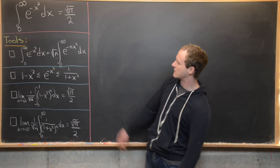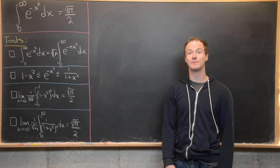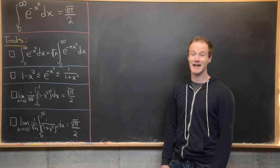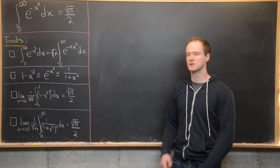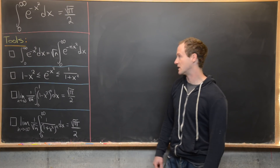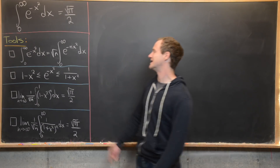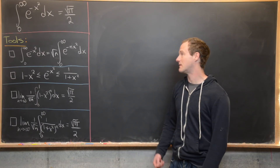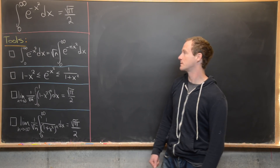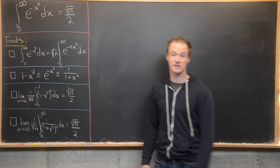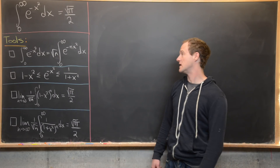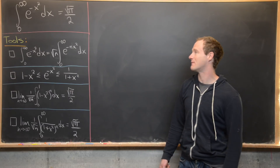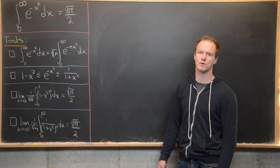We're going to do that by developing four pretty simple tools and then making an inequality involving these tools, which is quite short at the end. The first tool is that the integral from 0 to infinity of e to the minus x squared is the same as the square root of n times the integral from 0 to infinity of e to the minus n times x squared.